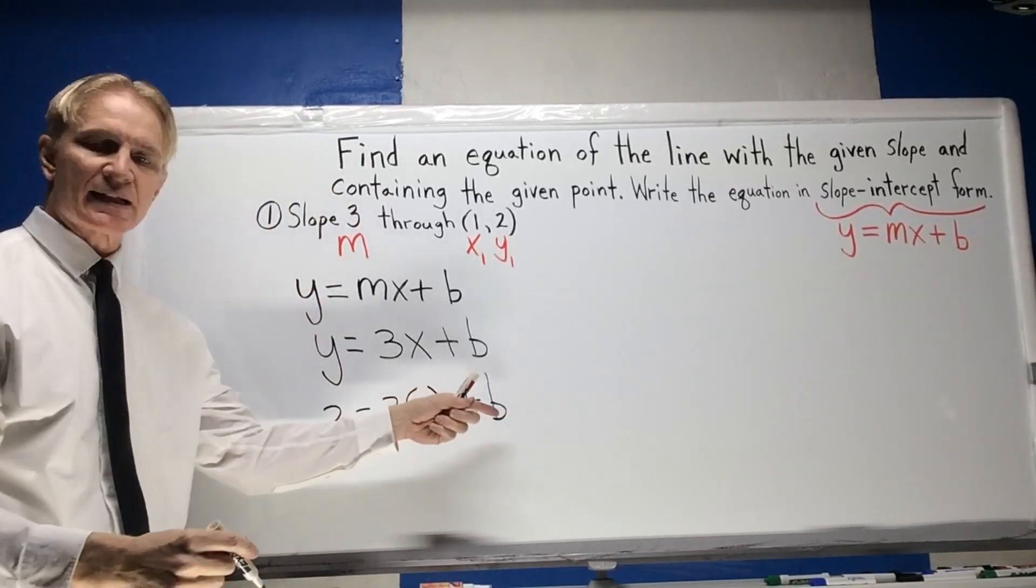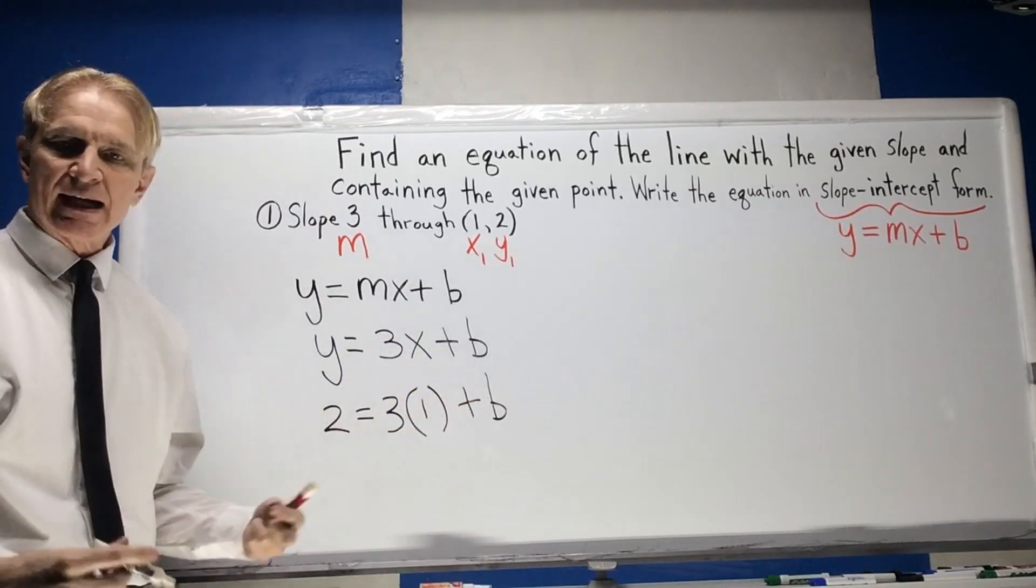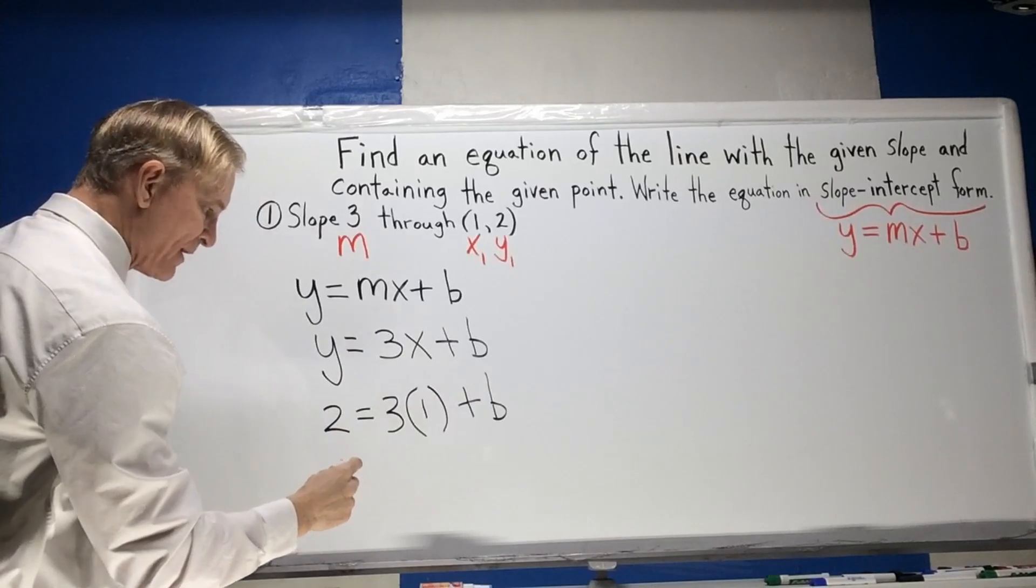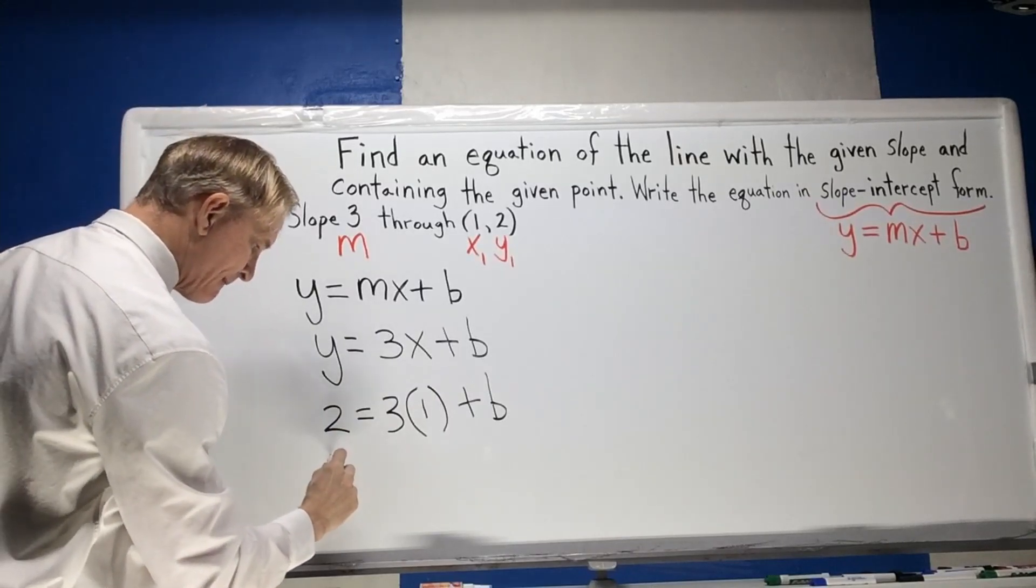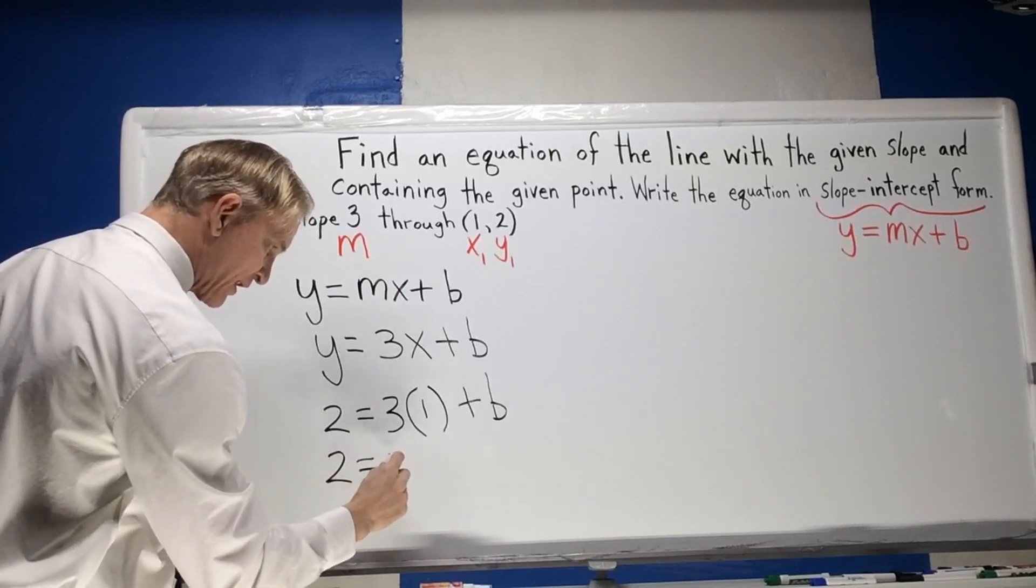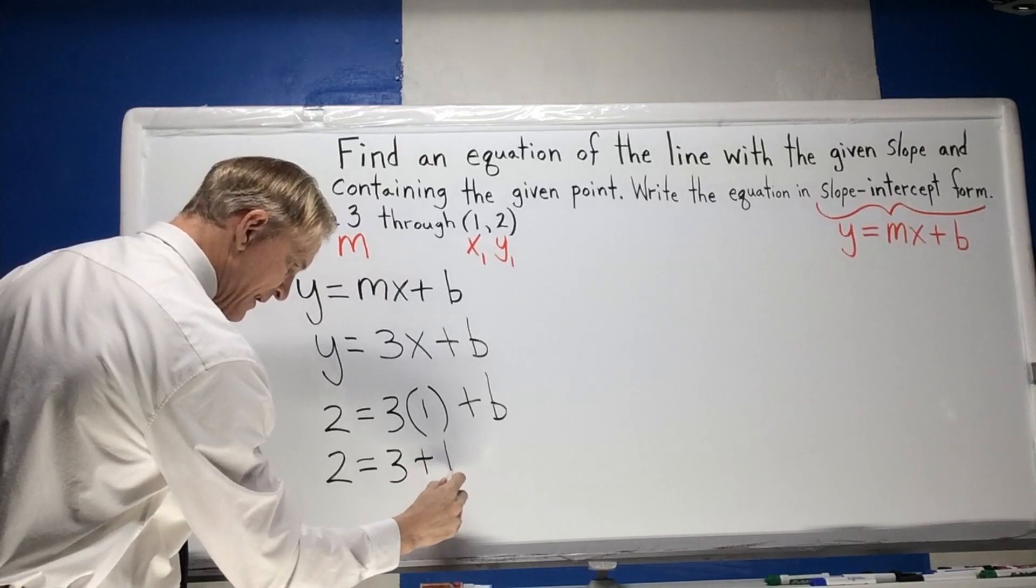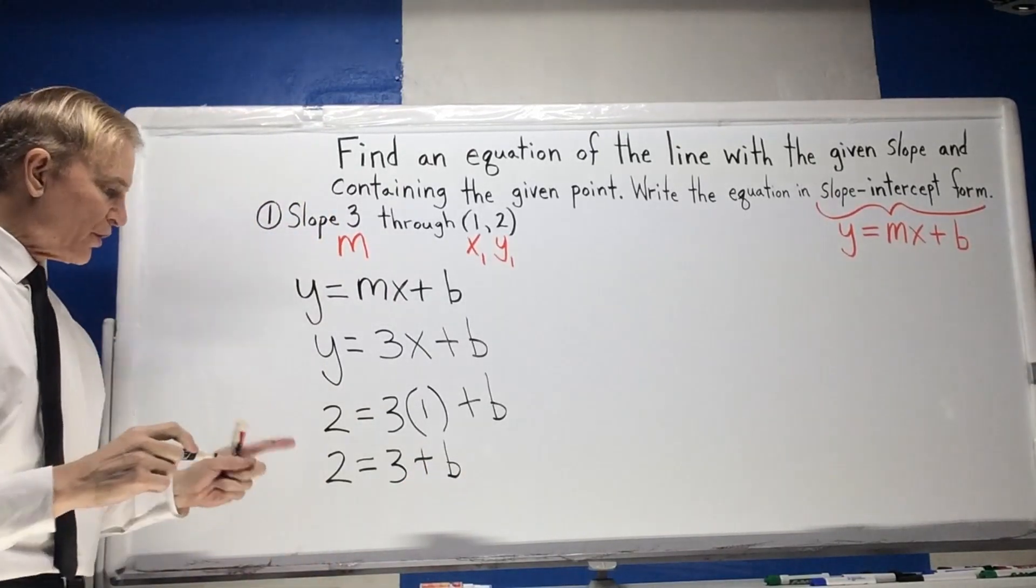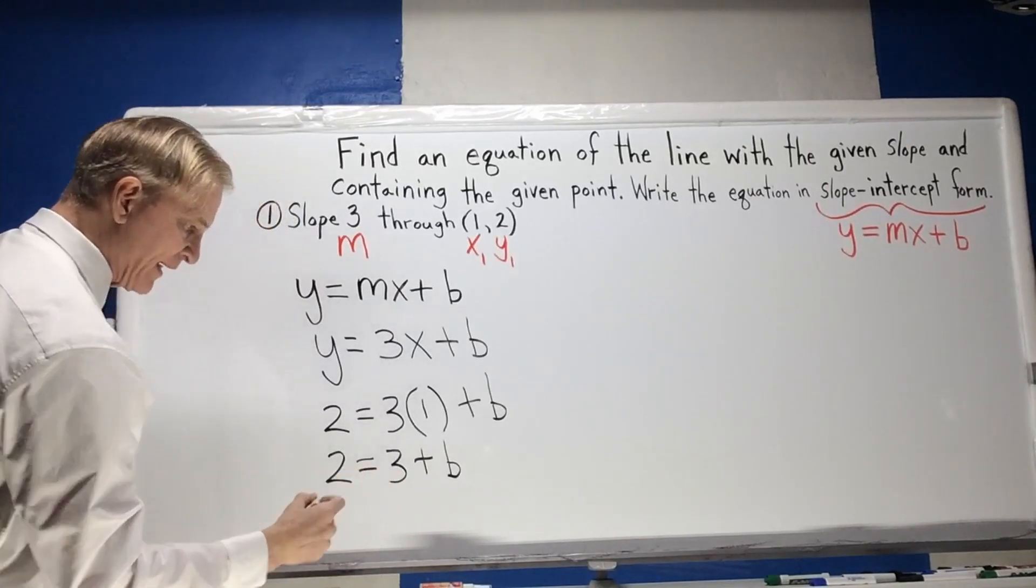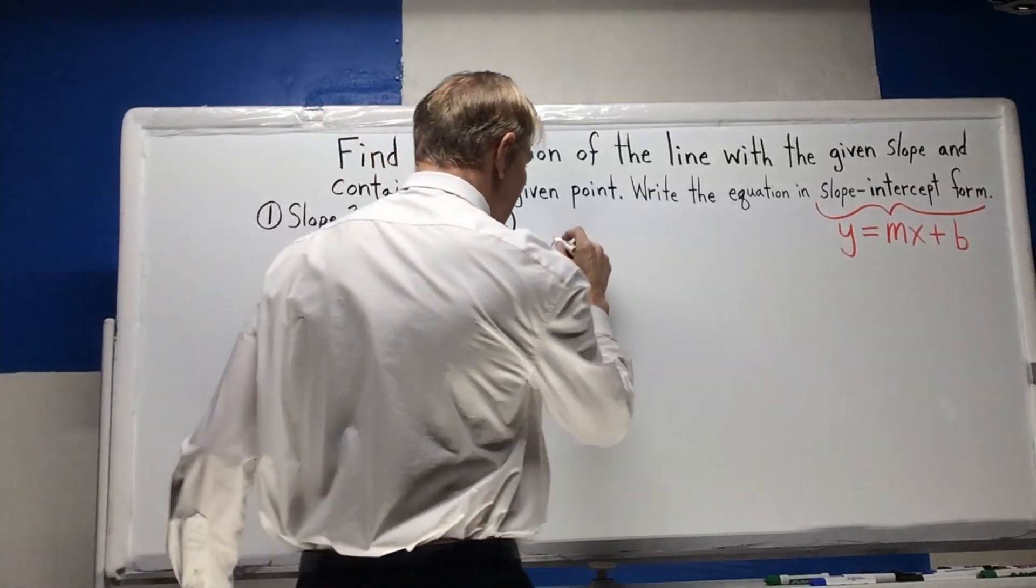Ah, we practice this a lot. If I have a whole bunch of numbers and I have one variable, I can solve for that variable. So let's real quickly solve for b. So this is going to be 2 equals 3 plus b. All right, so 2 equals 3 plus b. And then we're going to subtract 3 from each side. So let's carry this back up here so we don't run out of space.